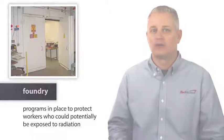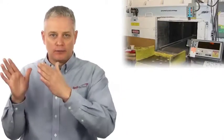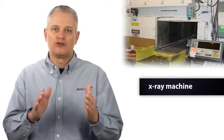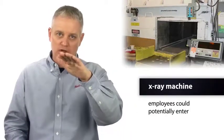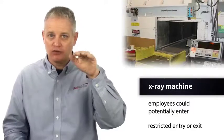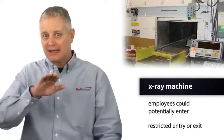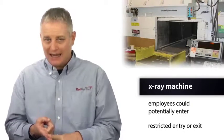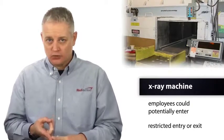About 20 feet from the picture we just saw was another x-ray machine, but this is quite different because employees could potentially enter, but they're going to have restricted entry or exit because they've got to stoop down and get into this conveyor belt. So large enough to enter, there is restricted entry or exit, and not designed for continuous human occupancy. This would be a confined space.